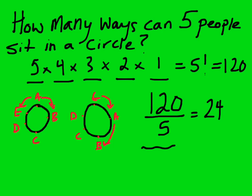So that's how many ways five people can be arranged to sit in a circle. Now, of course, there's a much easier way to do this question, and that's knowing the formula.